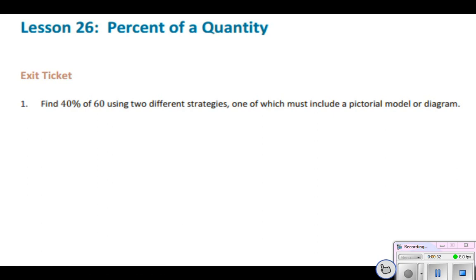If we take a look at the problem here: find 40% of 60 using two different strategies, one which must include a pictorial model or diagram. When we first start out, my brain automatically goes...